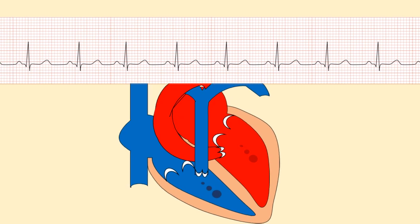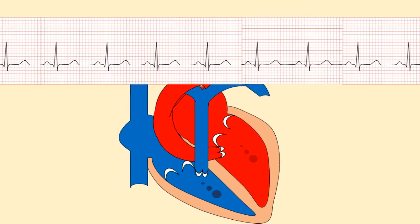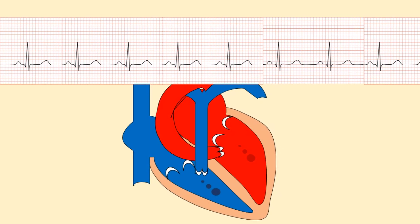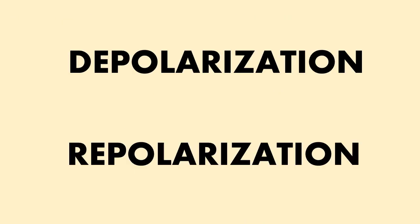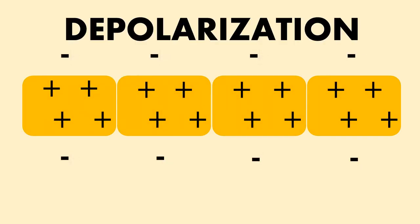The electrical activity of the heart is based on two processes that take place in the cardiac muscle cells — depolarization and repolarization. Most of the cells in our body are negatively charged on the inside. Depolarization is a change within the cell's electric charge, resulting in less negative charge inside the cell.